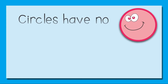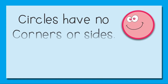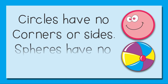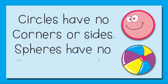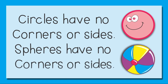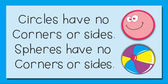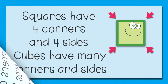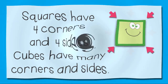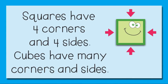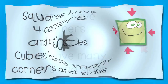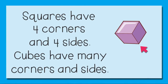Circles have no corners or sides. Spheres have no corners or sides. Squares have four corners and four sides. Cubes have many corners and sides.